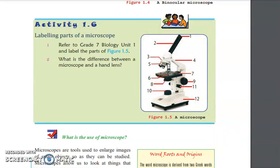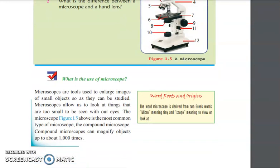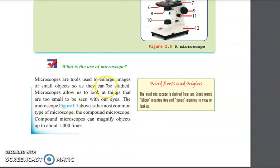The use of a microscope is to enlarge objects that cannot be seen by naked eye. The compound microscope is the most common type of microscope. It can magnify objects one thousand times.